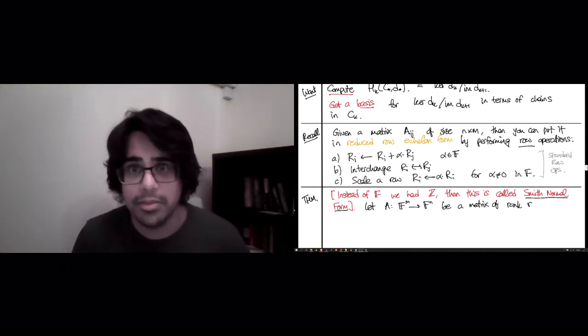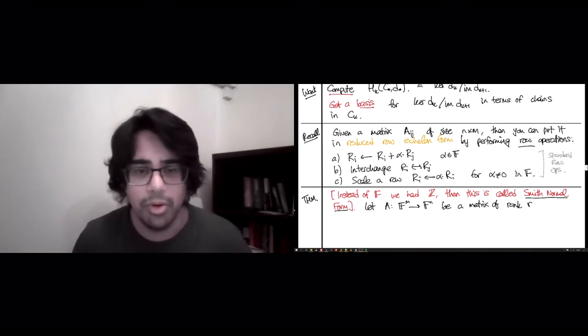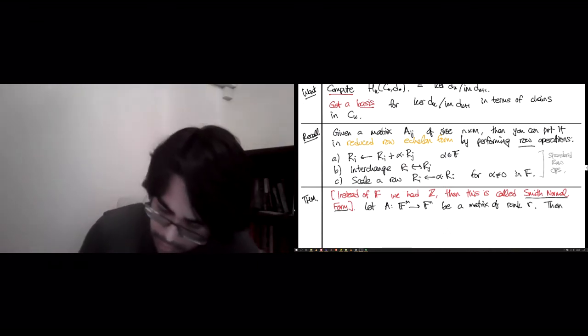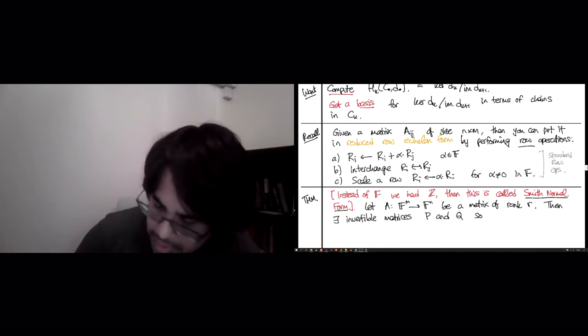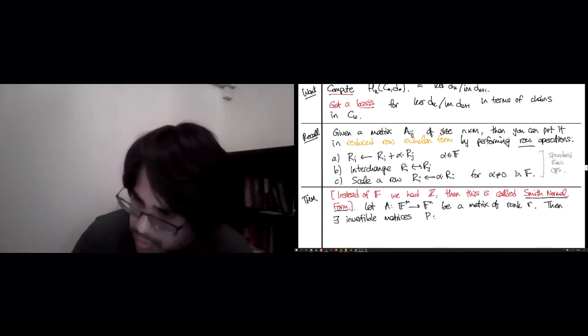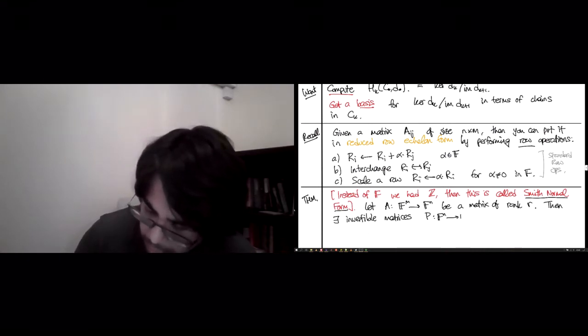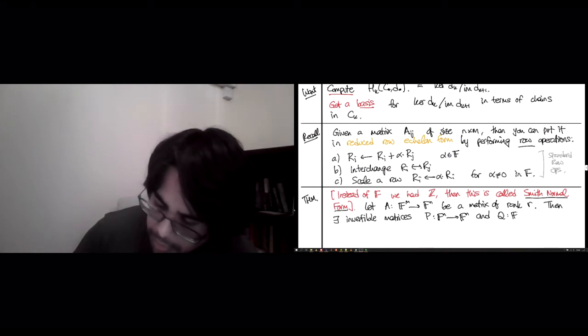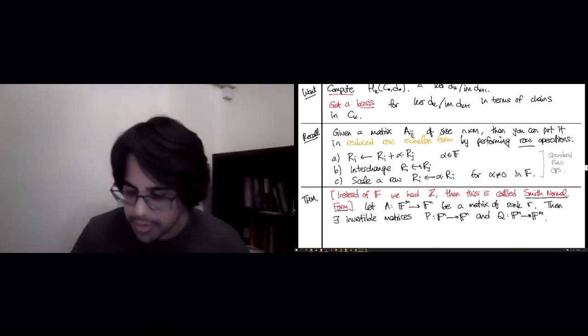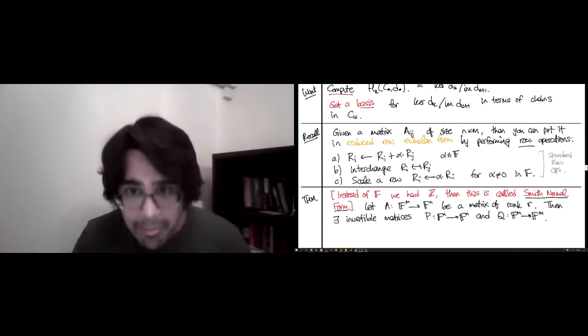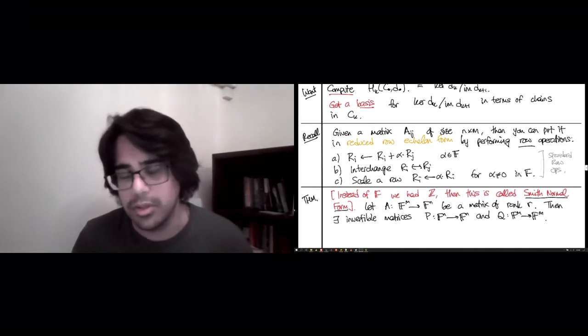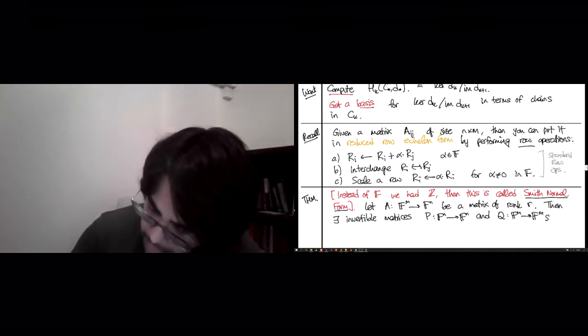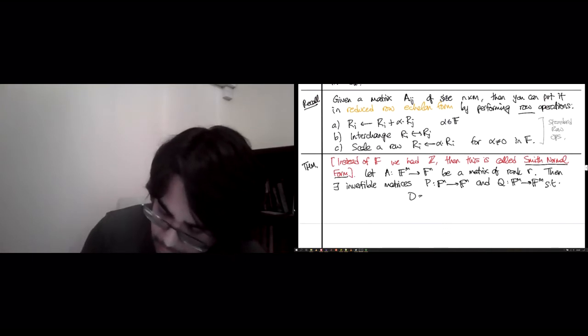Let A from M dimensional space to N dimensional space be a matrix of rank R. And now, by definition, R has to be less than or equal to the min of M and N. It cannot be more than those two. Then, there exists invertible matrices P and Q. I guess I should tell you where they go. So, P is going to end up going from Fn to Fn. And Q is going to go from Fm to Fm. So, as things stand for us right now, A is a matrix with N rows and M columns. And it has rank R. And P is N by N because it is invertible. And Q is M by M. It's also invertible.